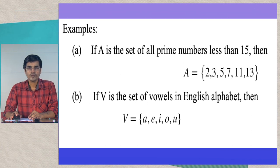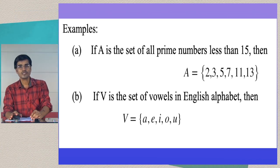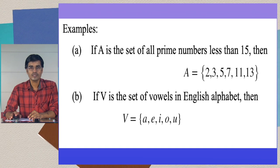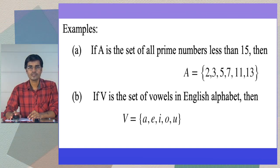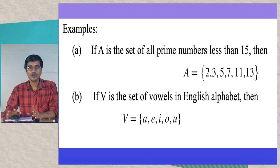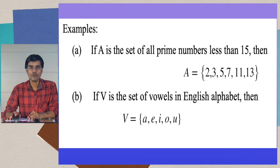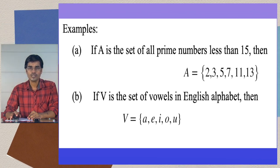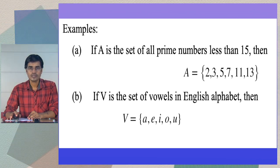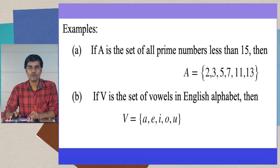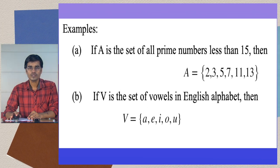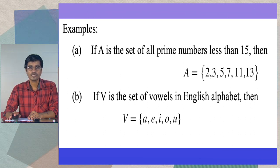If V is a set of vowels in the English alphabet, we write all the vowels, separating them by commas and enclosing them in curly brackets. So we get the set in tabular form: {a, e, i, o, u}. This is the set of vowels in the English alphabet represented in tabular method.